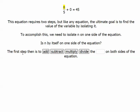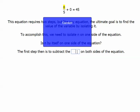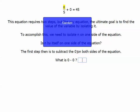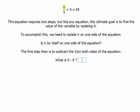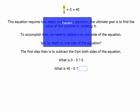Then the first step is to add, subtract, multiply, or divide the blank on both sides of the equation. Well, in this case, I'm going to be subtracting the 0 on both sides of the equation, and I get 0 minus 0 equals 0, and 45 minus 0 equals 45.